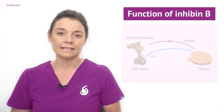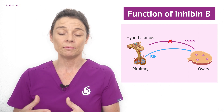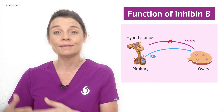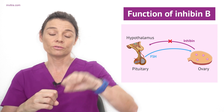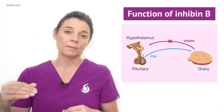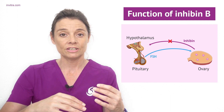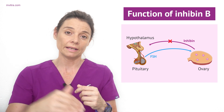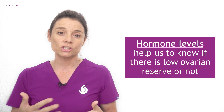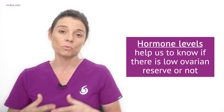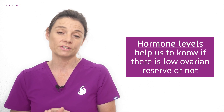Another hormone is inhibin B, which is also produced by the granulosa cells of the developing follicles. Inhibin B levels are inversely proportional to FSH levels since inhibin B actually inhibits follicle stimulating hormone. As a woman ages and produces less and less inhibin B, FSH is then going to increase, so a low inhibin B and a higher FSH level suggests that the woman is nearing menopause. The combination of the levels of hormones seen from all these tests can help us indicate whether we have a low ovarian reserve or not.